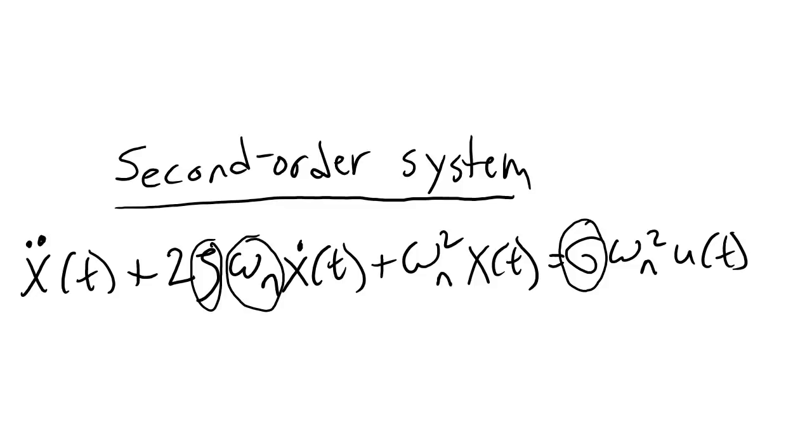Now if you've taken a class either in controls or in ordinary differential equations before, you know that I could take the Laplace transform of this equation in order to convert this equation from a differential equation into an algebraic equation. I'm going to do that here now. When we take a Laplace transform, a derivative becomes converted into the variable s. So the second derivative of my x of t here becomes s squared, since I have two derivatives, times x as a function of s instead of being a function of t.